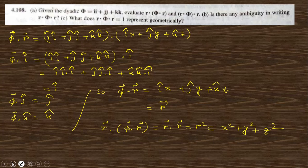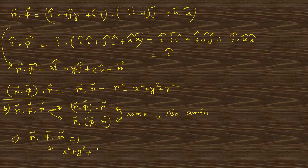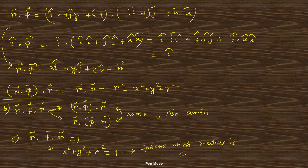Thus the answer is x² + y² + z² = 1. This represents the equation of a sphere with radius 1 centered at the origin. The answer to this question is clear.